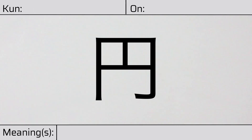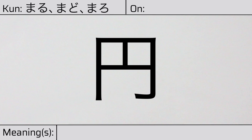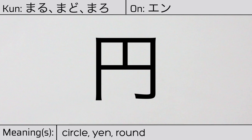Welcome to this lesson on Japanese Kanji. Today, we'll be discussing this character. This Kanji has kunyomi or Japanese readings of maru, mado, or maro. And it has onyomi or Chinese reading of en. This character has the meanings circle, yen, or round.